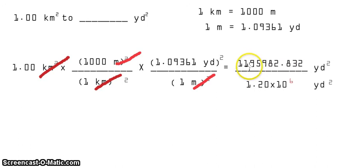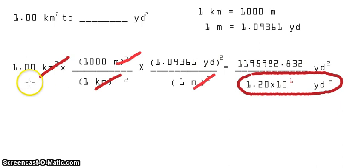1, 2, 3, 4, 5, and 6 to the left. So that is now our final answer. 1.20 times 10 to the power of positive 6 square yards. And that is the amount in square yards equivalent to 1.00 square kilometers.